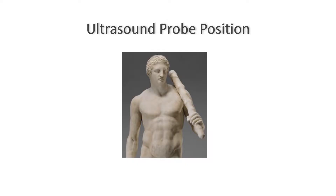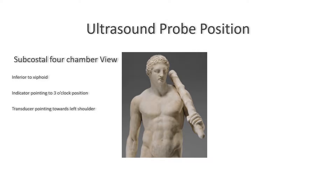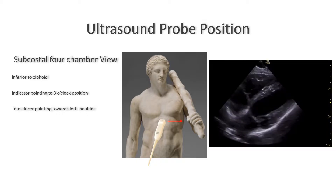Let's first talk about the ultrasound probe position. With the patient in the supine position, place the transducer flat at about two centimeters inferior to the xiphoid process. Have the indicator of the probe pointing towards the left of the patient at about a three o'clock position. The transducer itself is pointing towards the left shoulder.